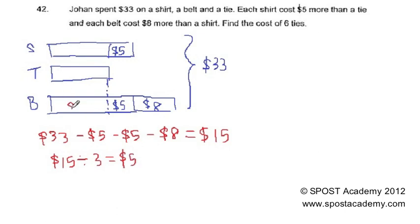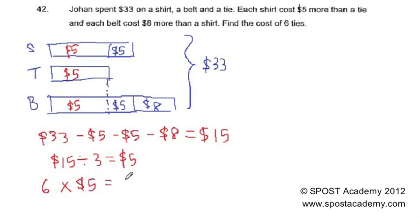So each unit represents $5. The question is asking for the cost of 6 ties. Looking at the model, you can see that 1 tie costs $5. So for 6 ties, we simply use 6 times $5, which gives us $30.